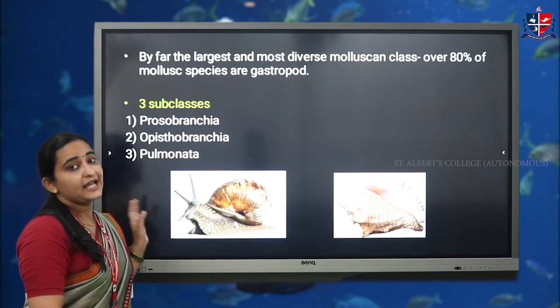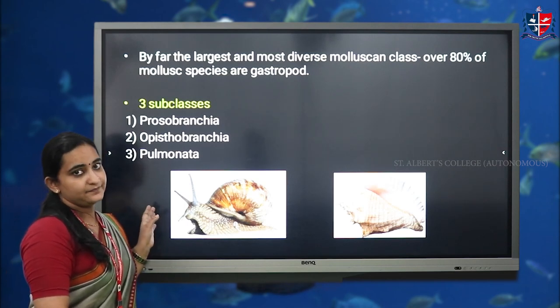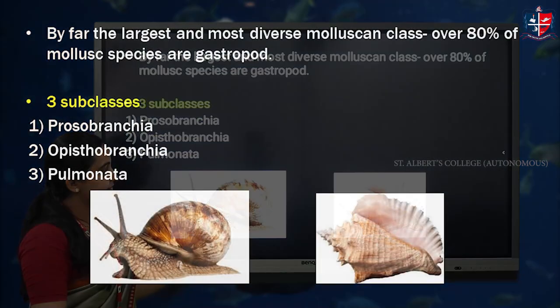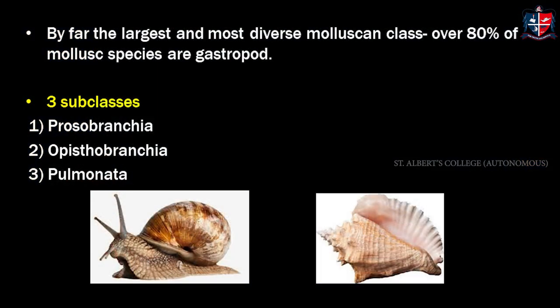Class Gastropoda is further divided into three subclasses: Prosobranchia, Opisthobranchia, and Pulmonata. These are some examples and images for Gastropoda, including snails and conches.